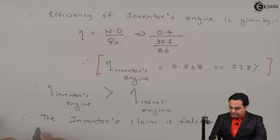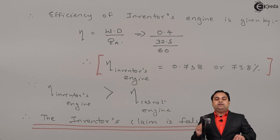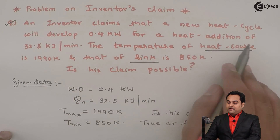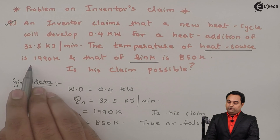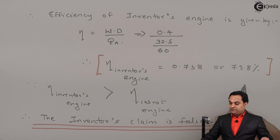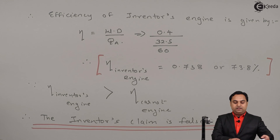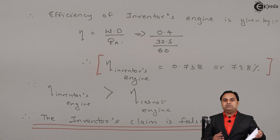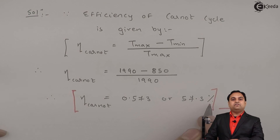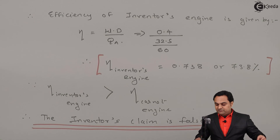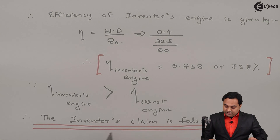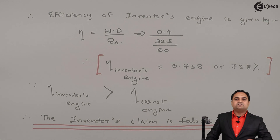Whatever the inventor claims — that his engine produces 0.4 kilowatt with heat addition of 32.5 kilojoule per minute between 1990 Kelvin and 850 Kelvin — cannot be possible, because his efficiency exceeds Carnot efficiency. Since Carnot gives maximum efficiency, if his efficiency were less than 57.3 percent his claim would be true, but since it crosses 57.3 percent, the claim is false.